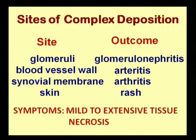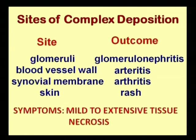Particularly, in glomerulonephritis, complexes are deposited on the membrane of the glomeruli. In case of vasculitis, they are deposited on the membrane of arteries. In case of arthritis, they are deposited on the synovial membrane, and in the skin, they create rashes.